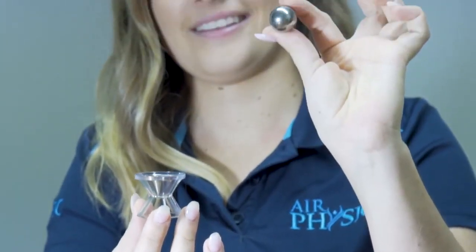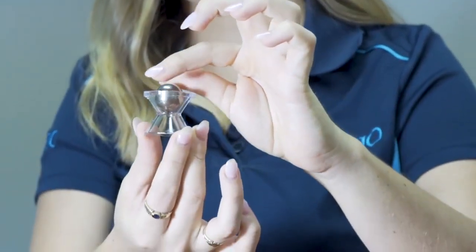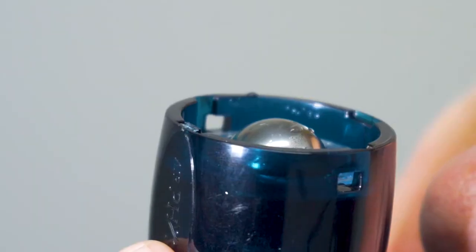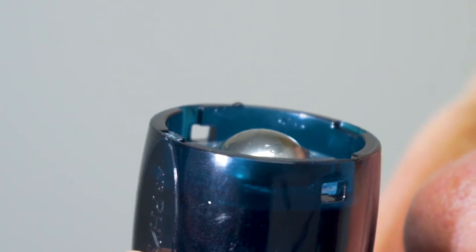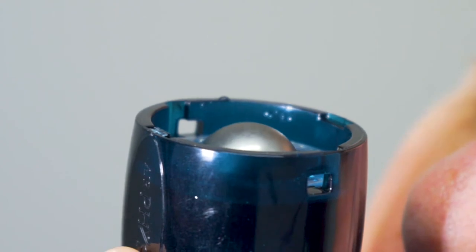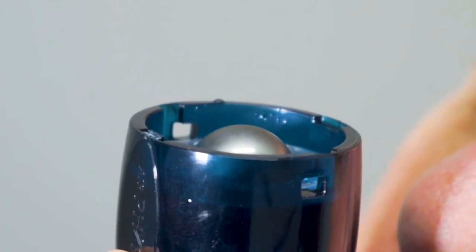Air Physio works similar in that the device has a stainless steel ball bearing which sits inside of the cone in the device. This creates an airtight seal. As your diaphragm expands when you blow out, it builds pressure in your lungs until it reaches a specific pressure which then lifts the stainless steel ball bearing off the cone.